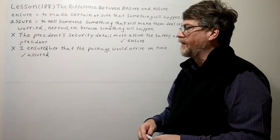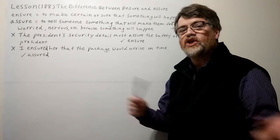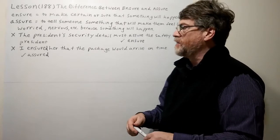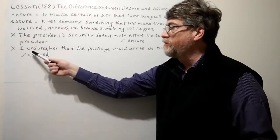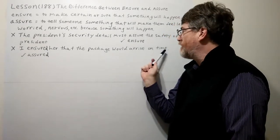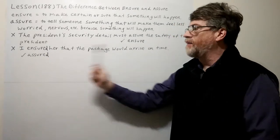And the second one here, this is where maybe somebody was worried, maybe they want something shipped to them quickly. They want to make sure they got it on time. So again with the X, this would be wrong if you use insured. I insured her package would arrive on time. No, I assured her that the package would arrive on time.